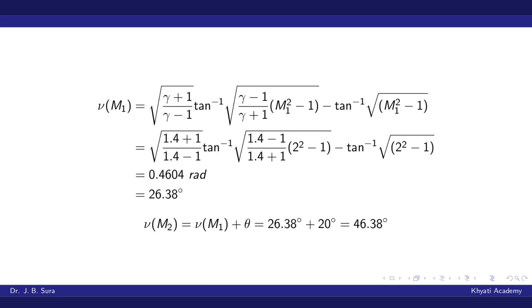If you insert the value of gamma as 1.4 and M₁ as 2, you will get the answer as 0.4604 radians, which in degrees will become 26.38 degrees.